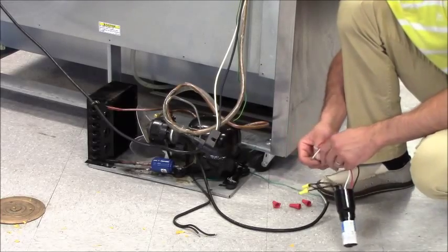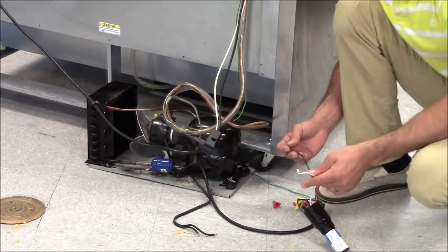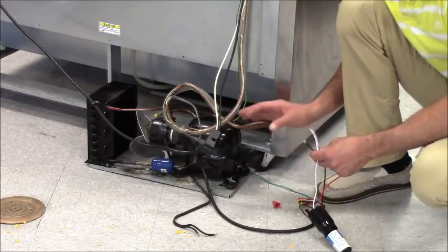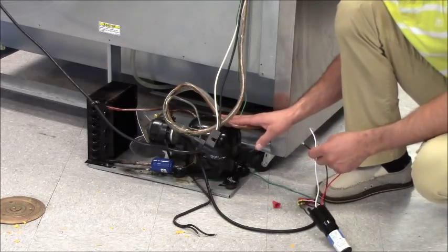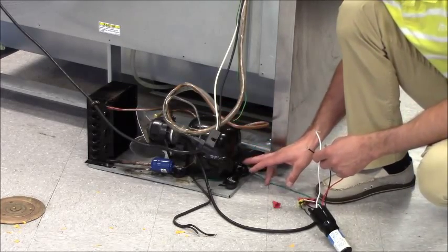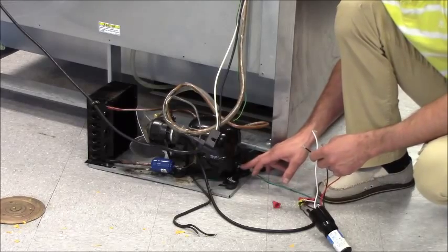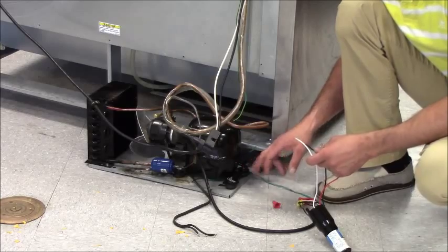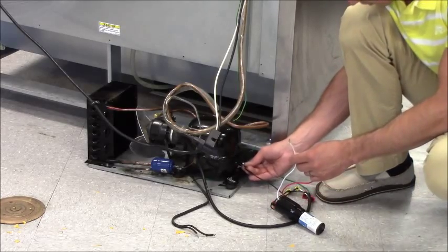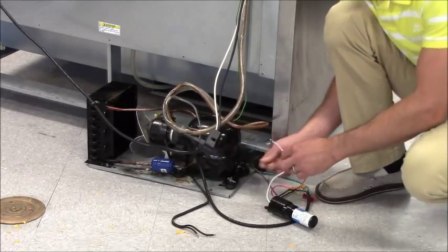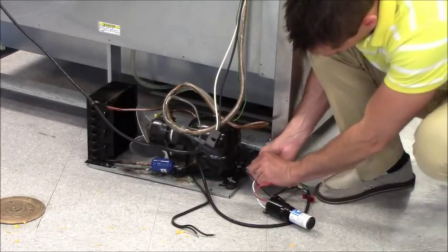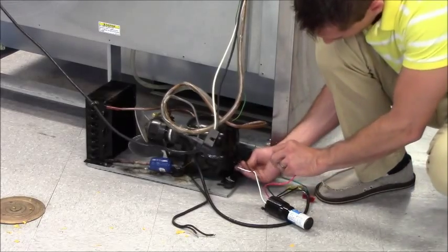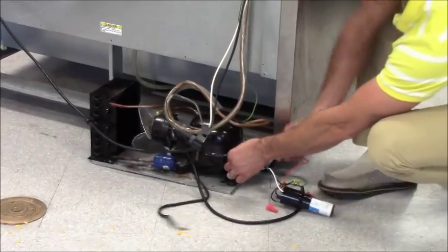So now comes the complicated part. What we're going to do is take these three wires and apply them to the compressor. If you look at the compressor, there's going to be three pins: C, S, R. The C is going to be your black wire. The S is going to be your white wire. The R is going to be your red wire.